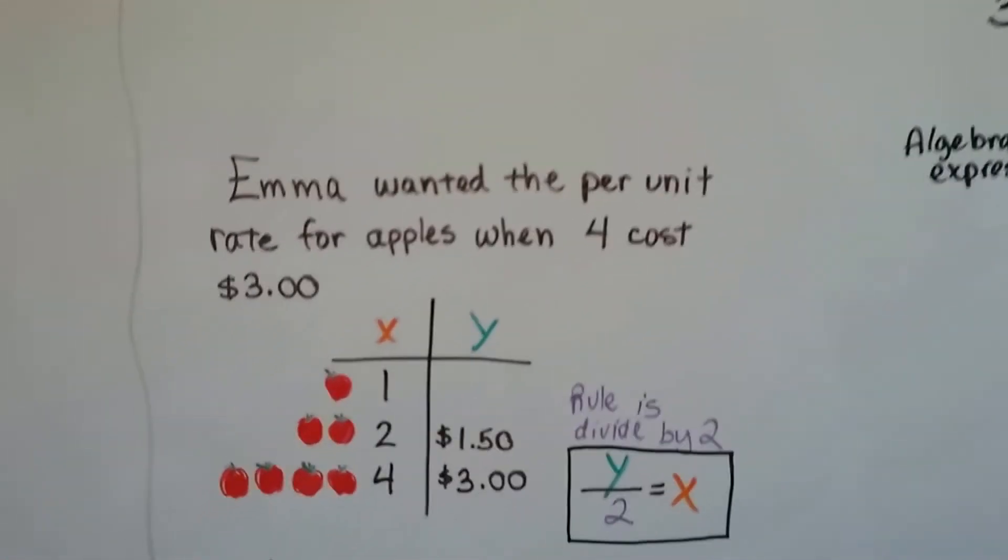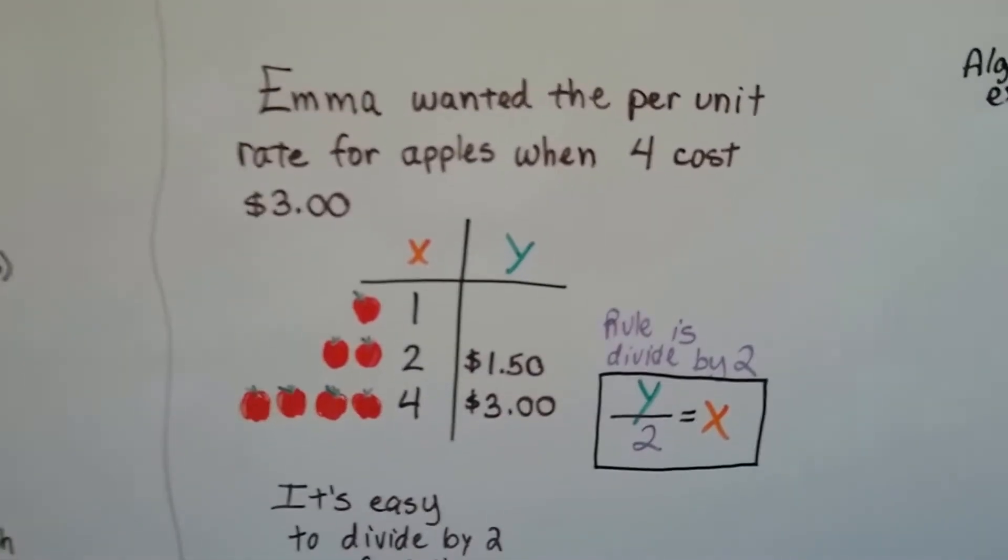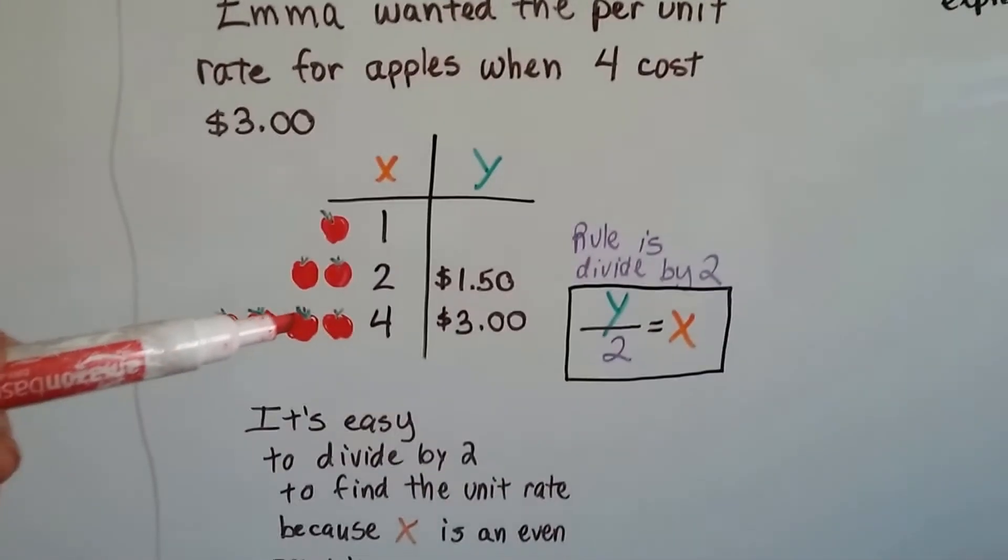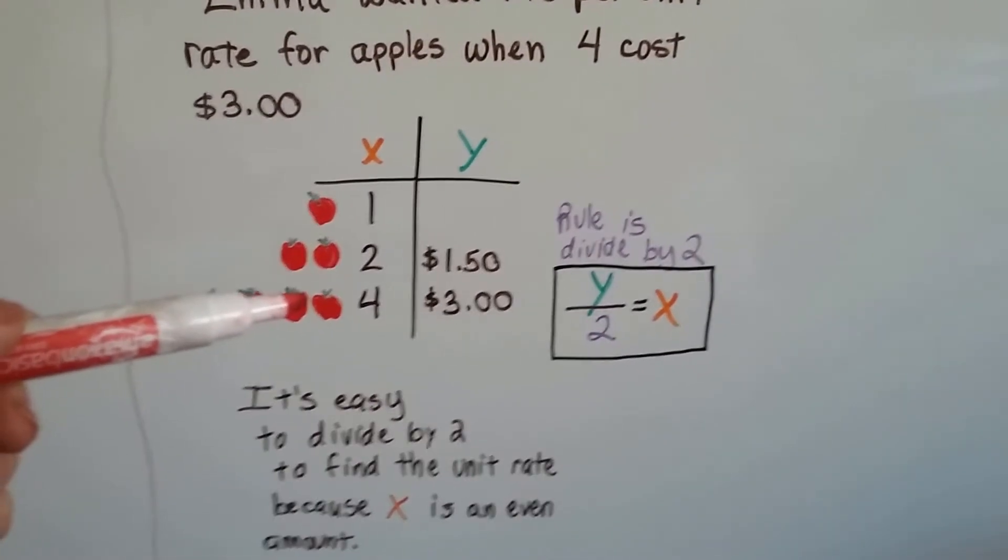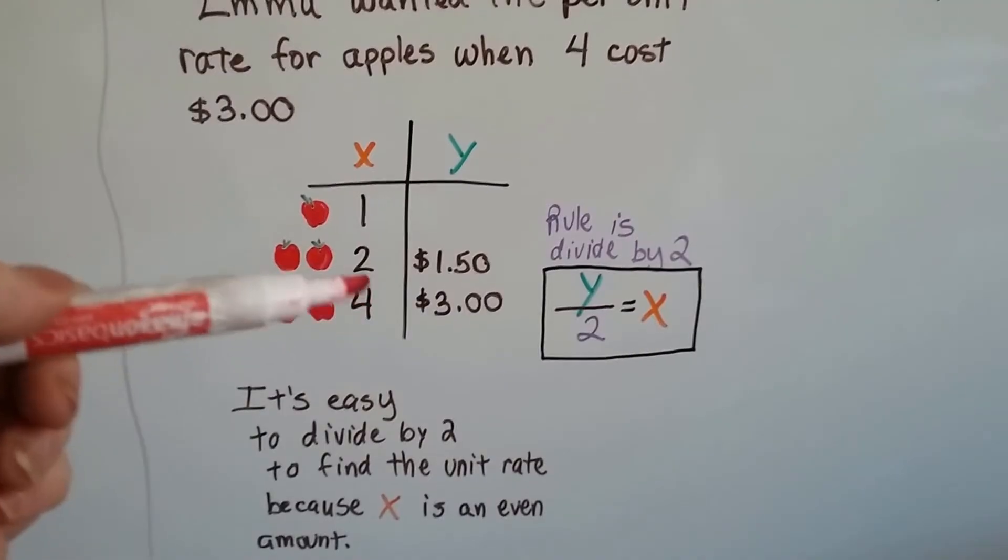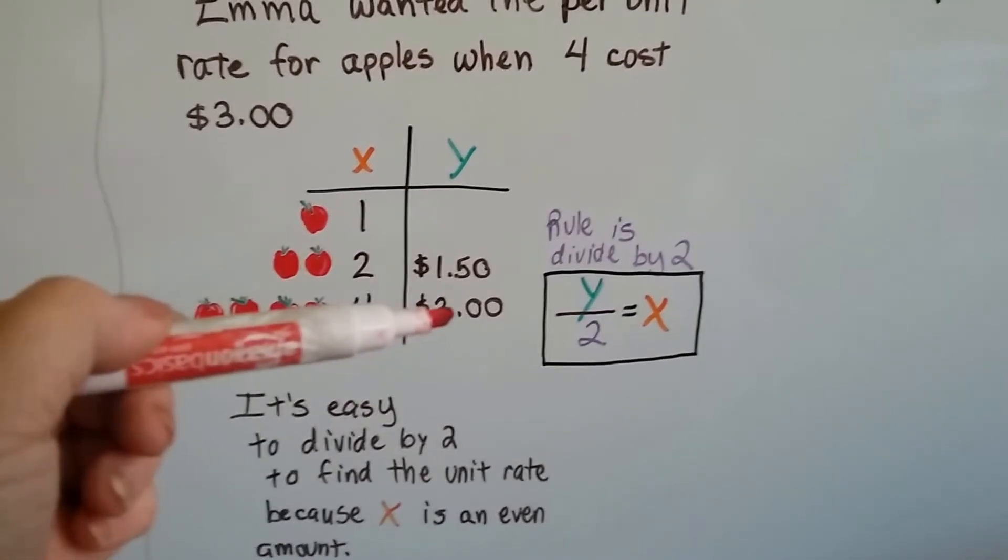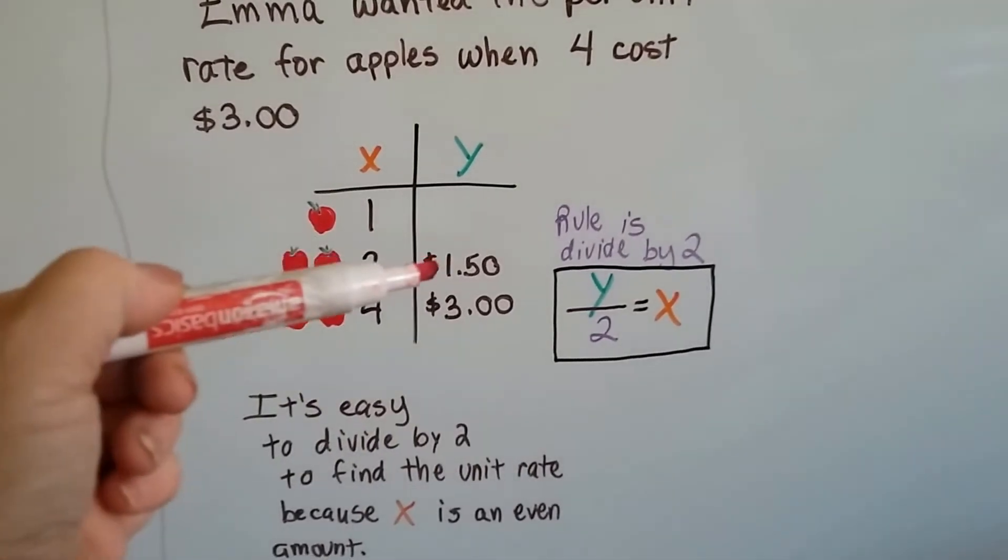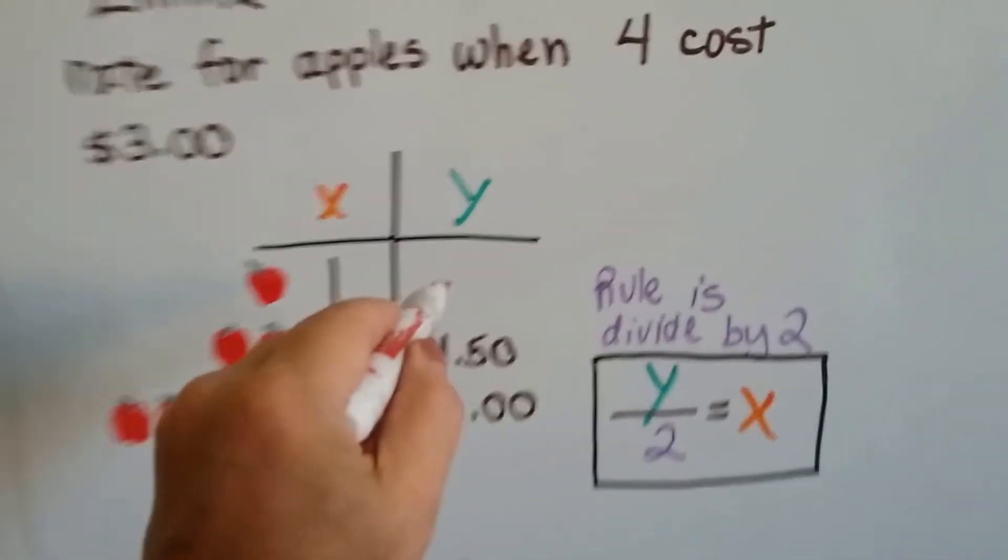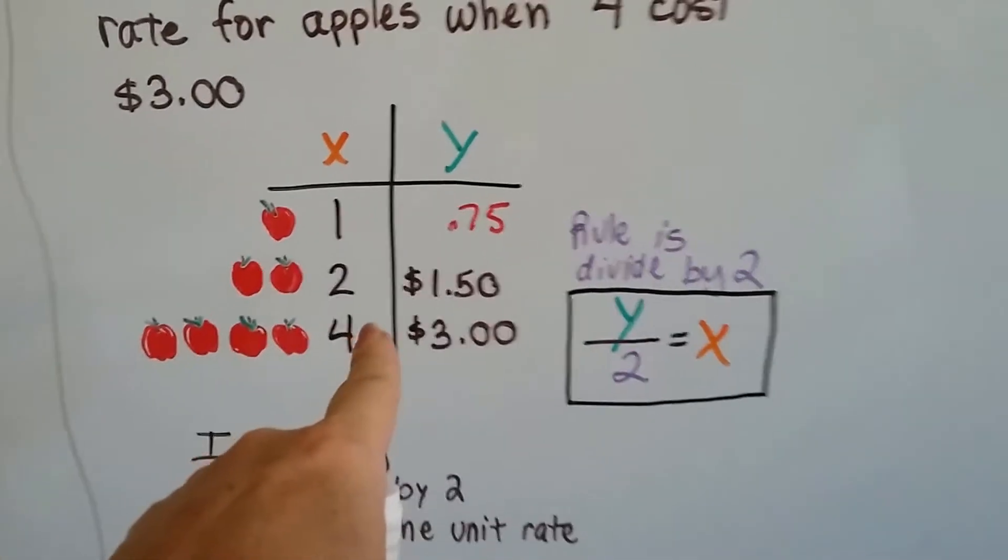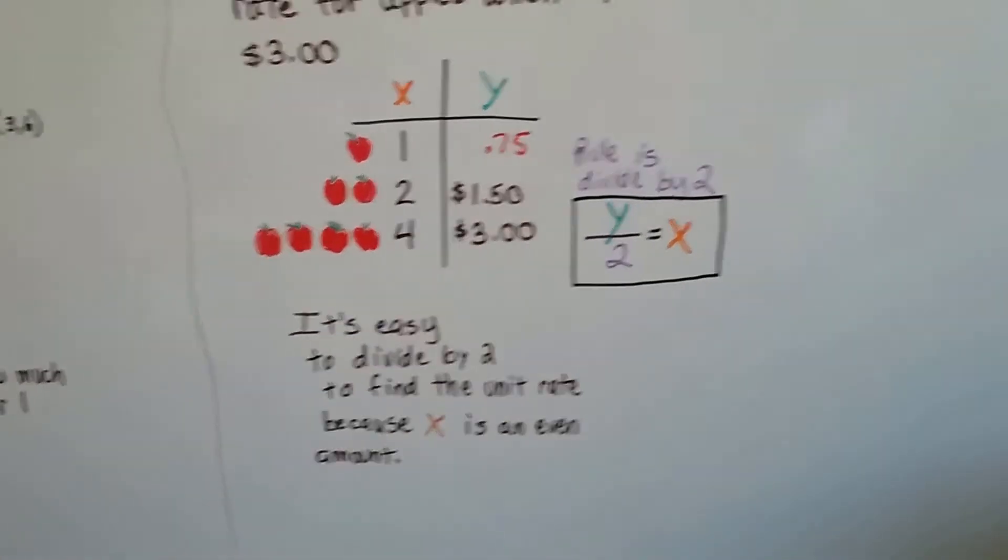If Emma wanted the per unit rate for apples when 4 cost $3, if 4 are $3, it's easy to divide by 2 to find the unit rate because x is an even amount. So we can cut this in half to 2. We'll cut the $3 in half to $1.50. If we cut the 2 in half to 1, we can cut the $1.50 in half to 75 cents. Now we know the per unit rate for the apples is 75 cents.